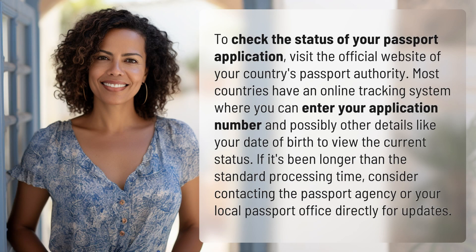To check the status of your passport application, visit the official website of your country's passport authority. Most countries have an online tracking system where you can enter your application number and possibly other details like your date of birth to view the current status. If it's been longer than the standard processing time, consider contacting the passport agency or your local passport office directly for updates.